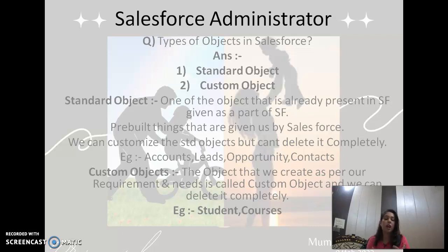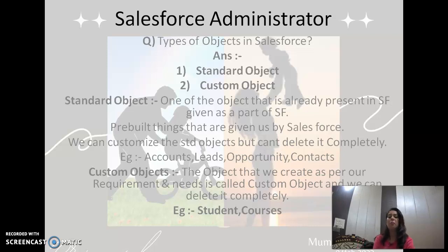These questions are very important from an interview point of view also, so keep all these things in your mind. Some examples of standard objects are: accounts, leads, opportunity, and contacts. We will learn later on what are account objects, lead objects, and opportunity objects in detail.